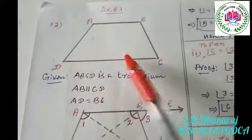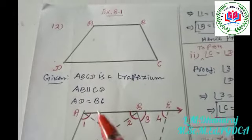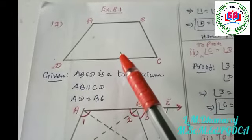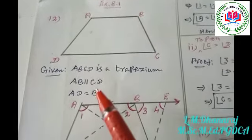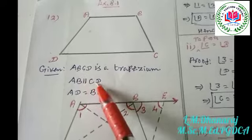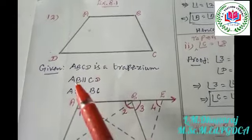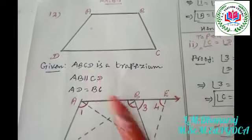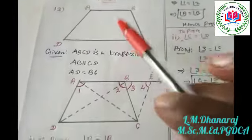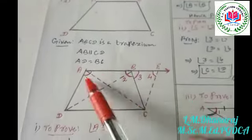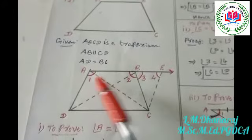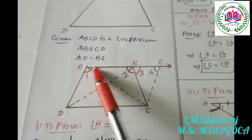Question number 12 in Exercise 8.1. It is given that ABCD is a trapezium — one pair of sides is parallel, so AB is parallel to CD, and AD is equal to BC. From the given diagram, we label angles: angle one and angle two.